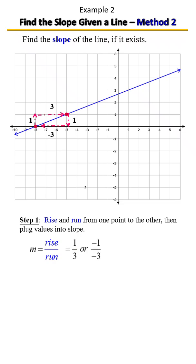In either case, whether your signs are both positive or both negative, it's still going to equal a positive slope of one-third.